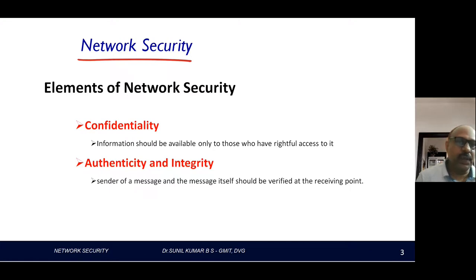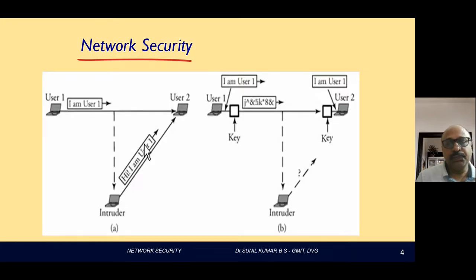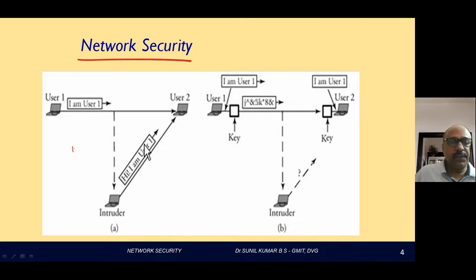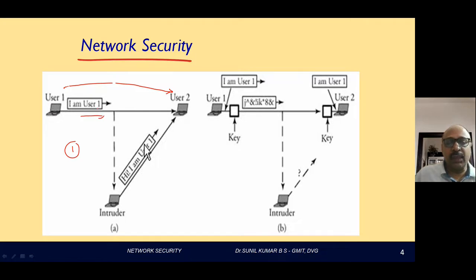There are many means of giving security in computer networks. Here is an example showing how security can best be offered. User 1 wants to make communication with User 2 and has sent a message: 'I am User 1.' It is expected that this message is received by User 2 directly.